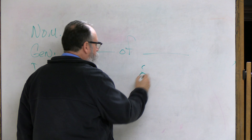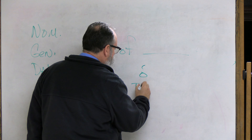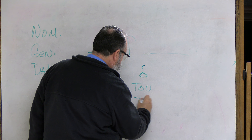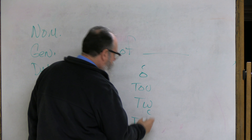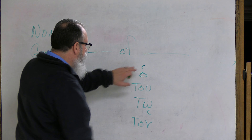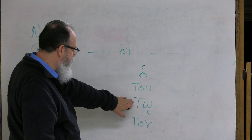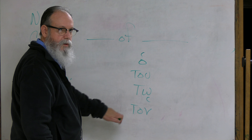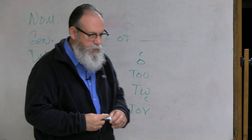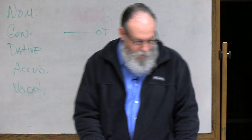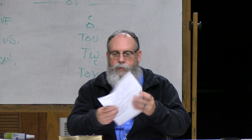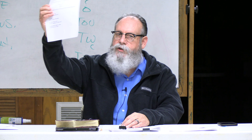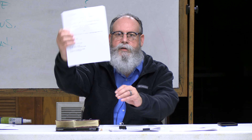The masculine definite article forms are: ho, tou, tō, ton — nominative, genitive, dative, and accusative. We'll see these when we look at prepositions. Now look at the page titled 'Greek Prepositions' — it has a box at the top.